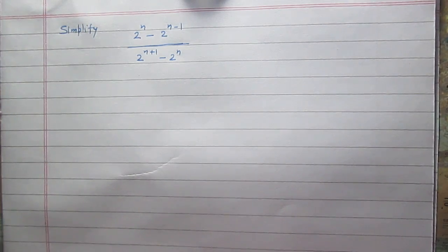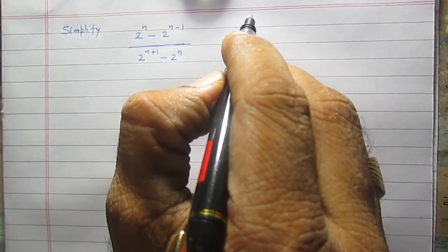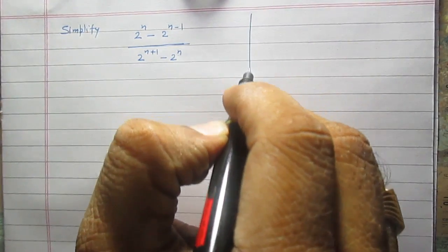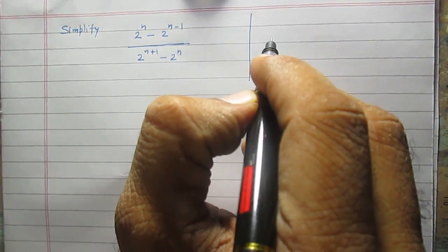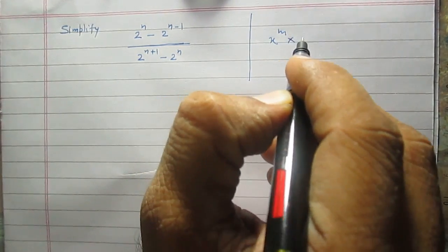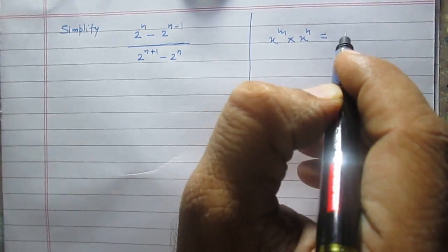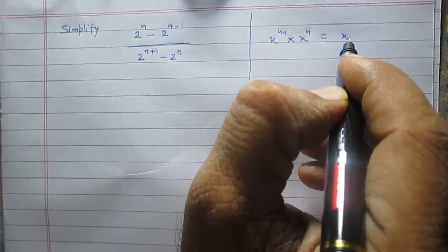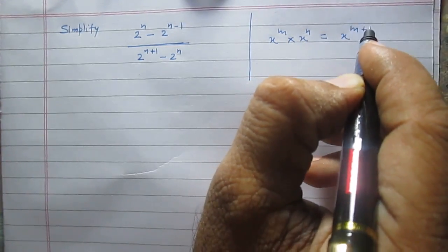Before solving this question, let us discuss laws of exponents. According to the laws of exponents, x raised to the power m multiplied by x raised to the power n equals x raised to the power m plus n.